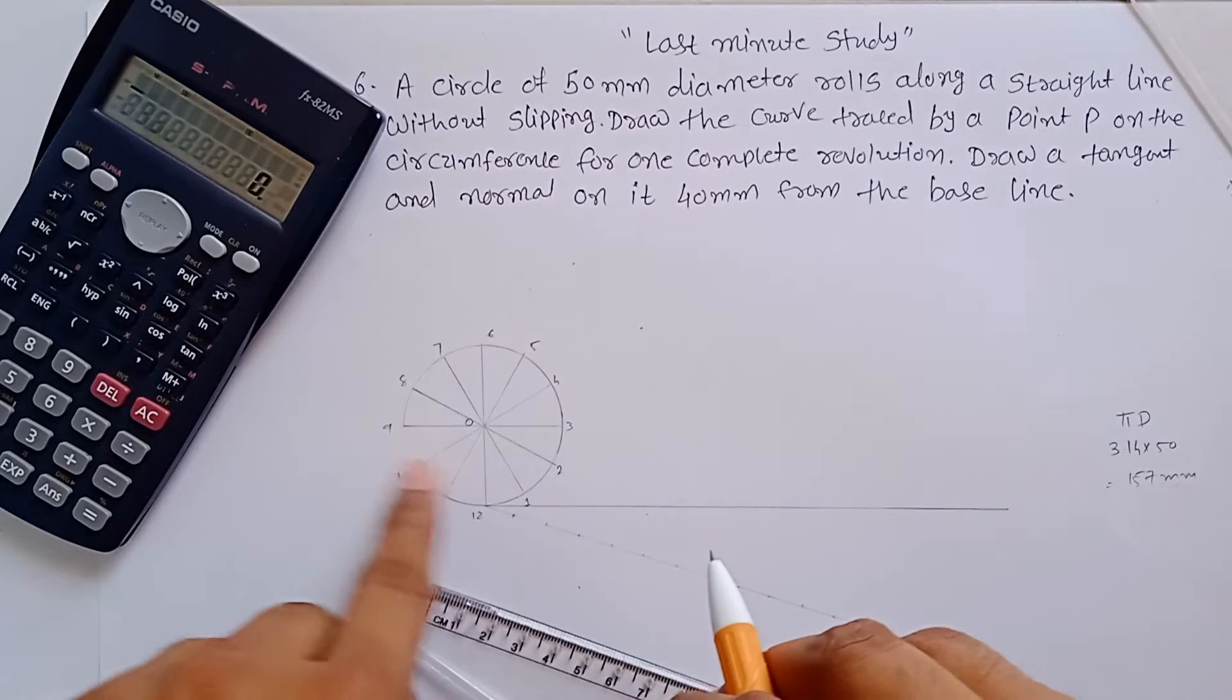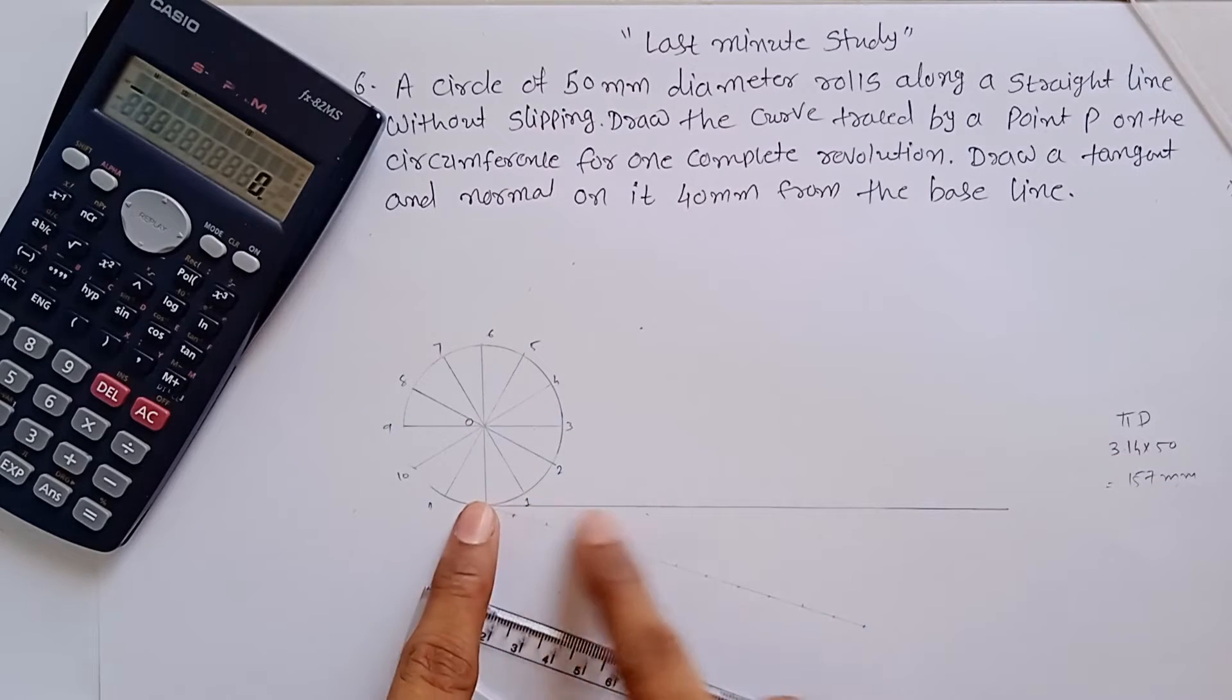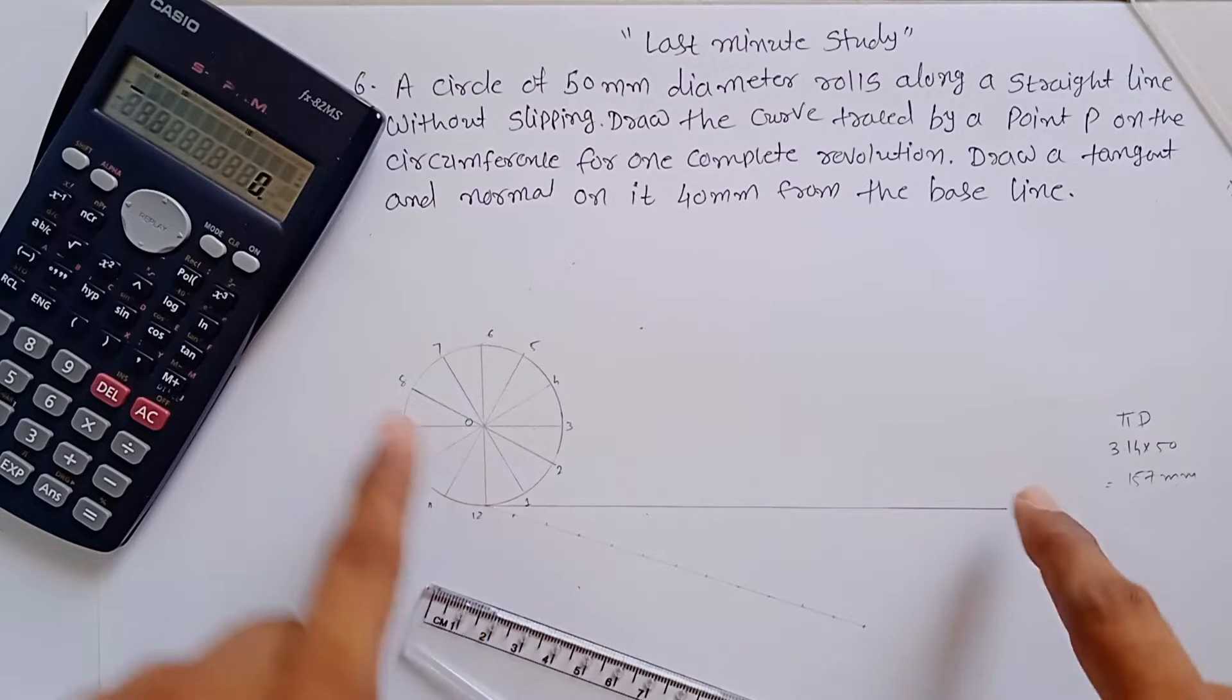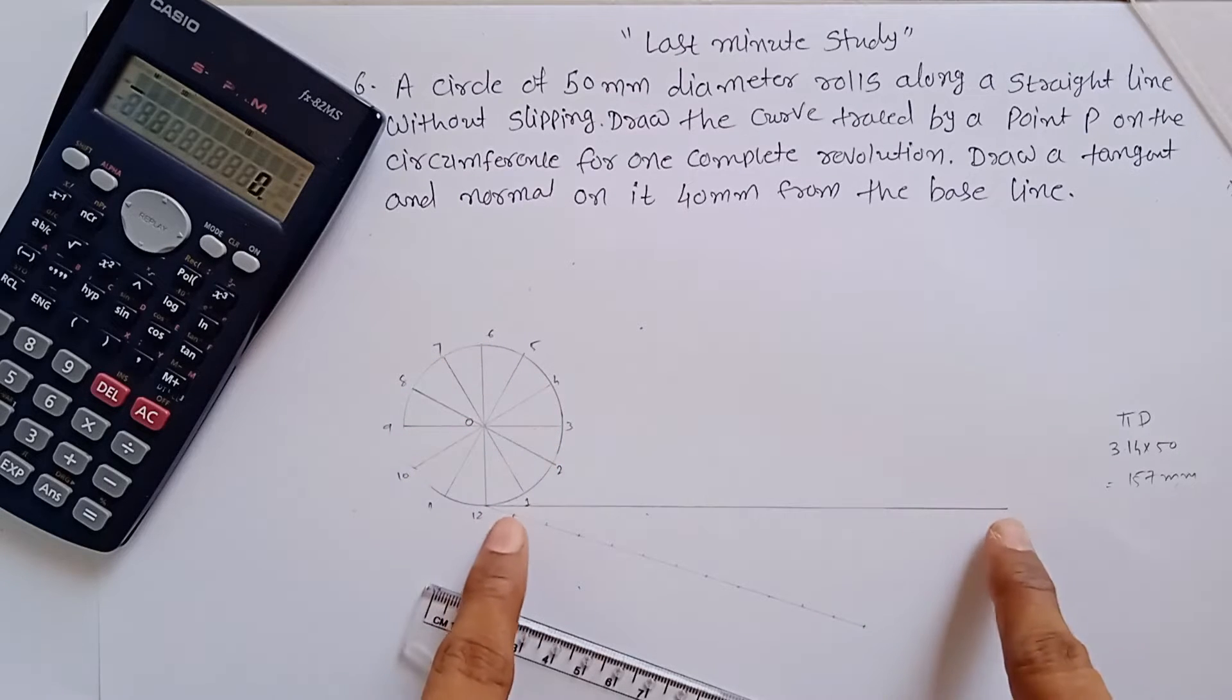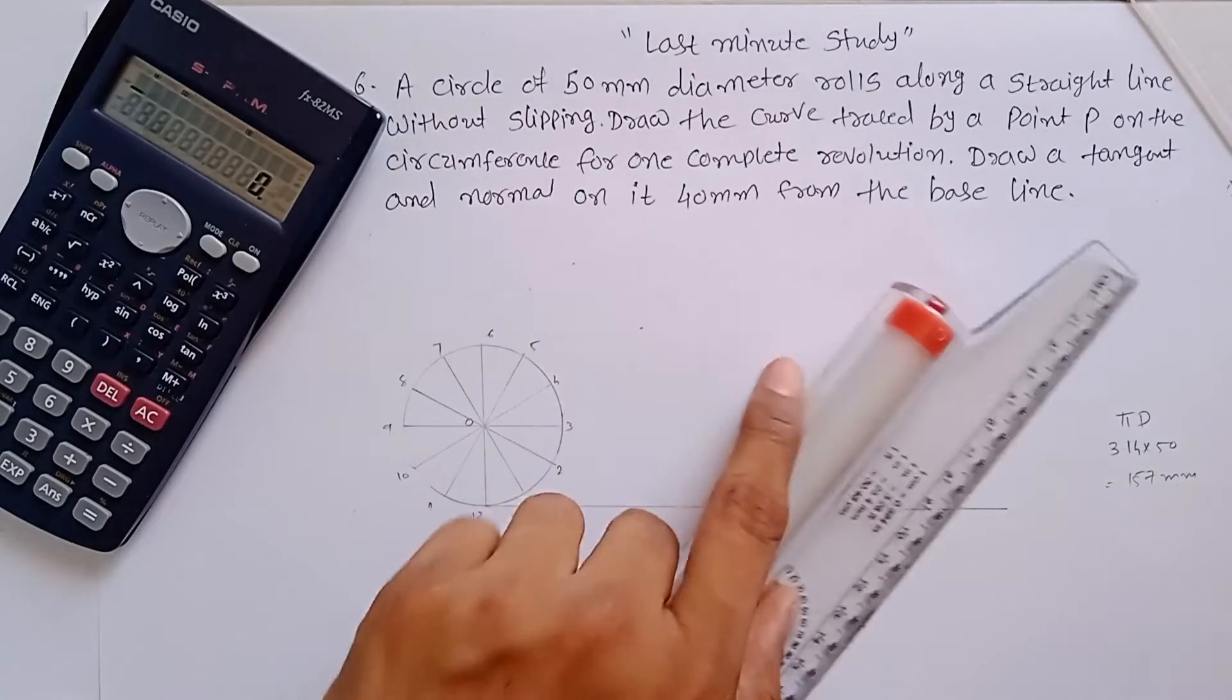If you divide this circle into 8 equal parts, then you have to divide this line into 8 equal parts. Whatever the number you choose to divide this circle, you have to divide this line with the same number.